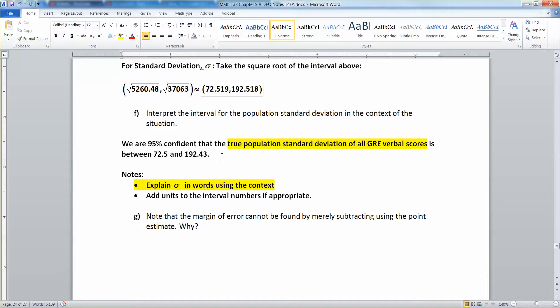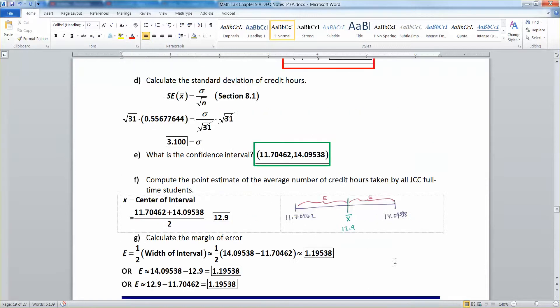Now it's not appropriate to try to use a margin of error argument to find the point estimate. Now what am I talking about there? Let me go back to section 9.2. Here we go. This was the last problem in section 9.2.